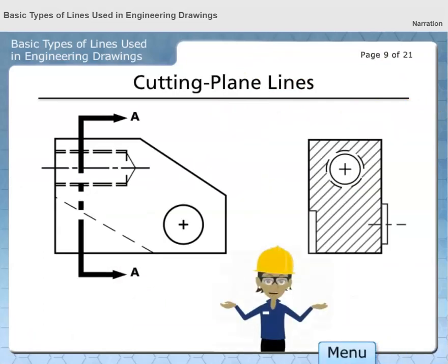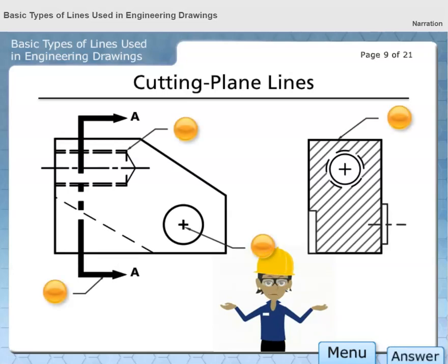Cutting plane lines represent an imaginary cut through a part to show a cross section. These lines may be a series of long dashes or two short dashes between a pair of long dashes. Which one of these lines represents a cutting plane line?